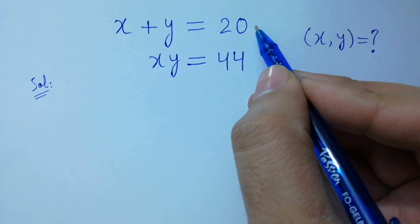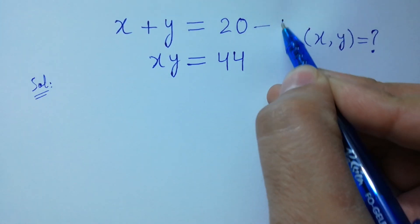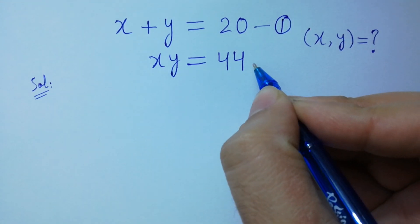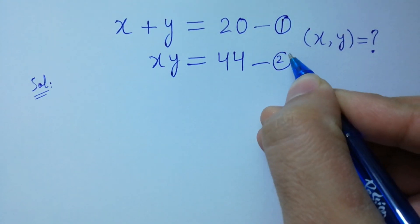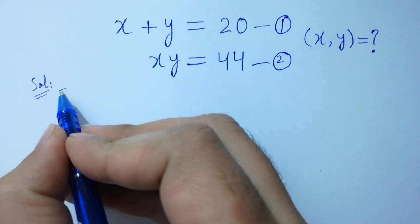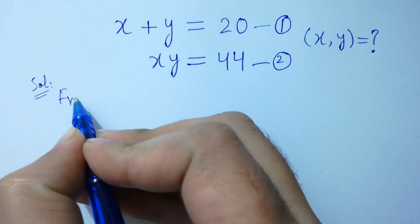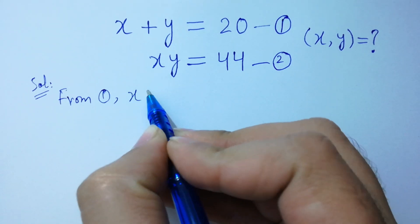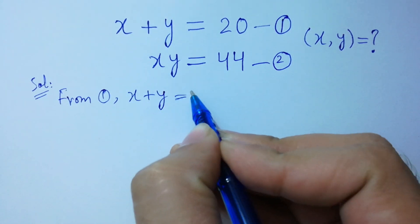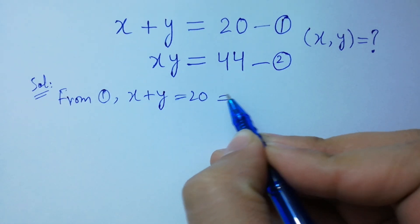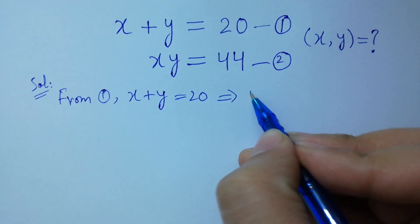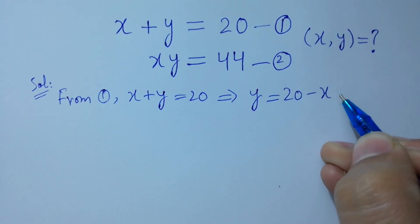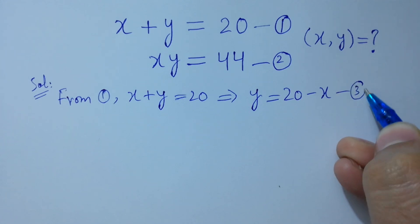Suppose x plus y equal to 20 is the first equation, and x times y equal to 44 is the second equation. From the first equation, x plus y equal to 20, then y equal to 20 minus x. Suppose this is the third equation.